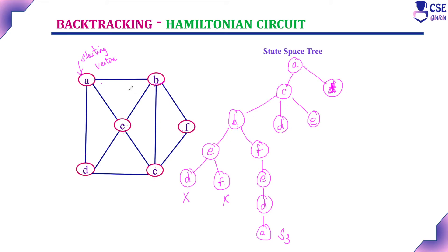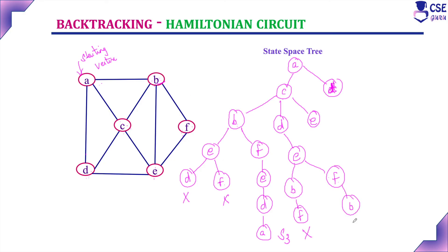Now check path A-C-D. From D, unvisited vertex is E. From E you can visit B or F. If visiting B, unvisited vertex is F, but from F you cannot return back to A — dead end. Check E then F: from F visit B, and from B you can return back to A. This is solution 4: A-C-D-E-F-B-A. We need to check whether other solutions are possible, so backtrack and check path A-C-E.